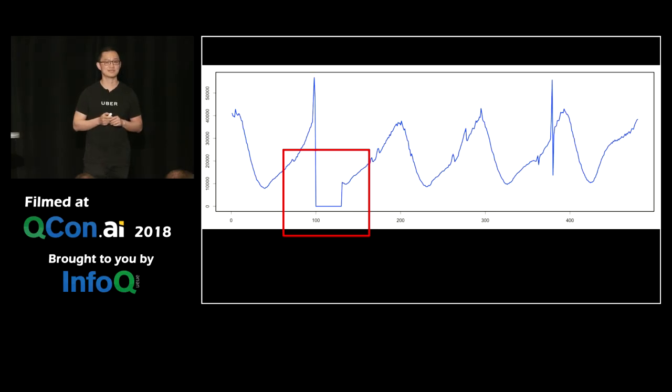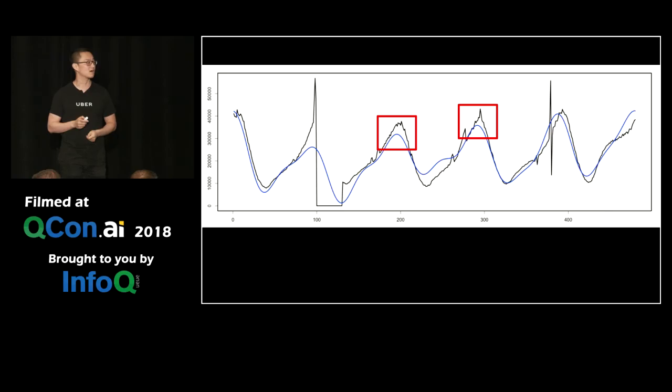But what if there's an outage? We live in an imperfect world. When there's an outage, our metrics has this huge drop as highlighted by the box. All of a sudden, our forecasting will be off. If you look at these boxes, you can see that on the peak of the next two tops, there's a big chunk of errors.